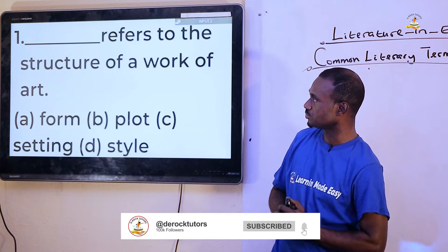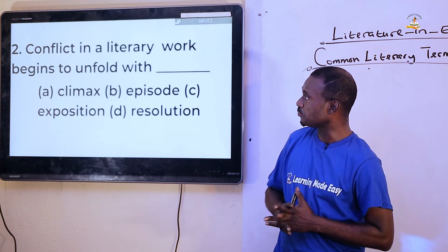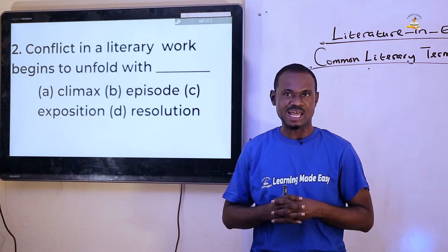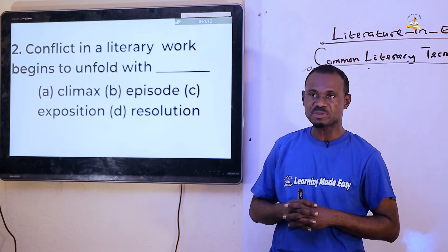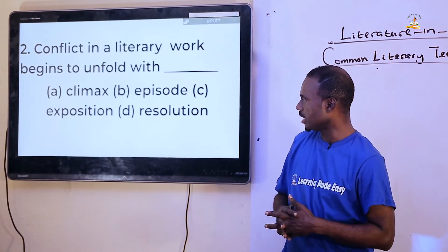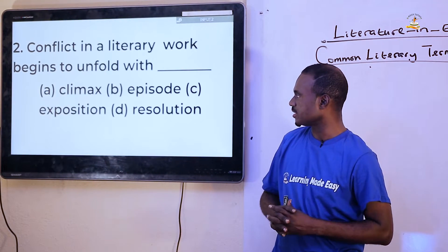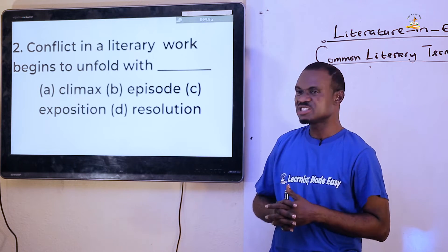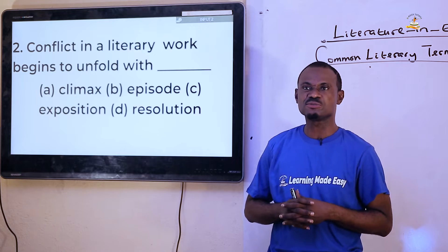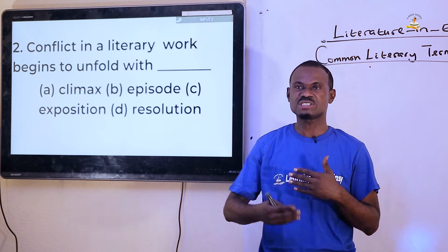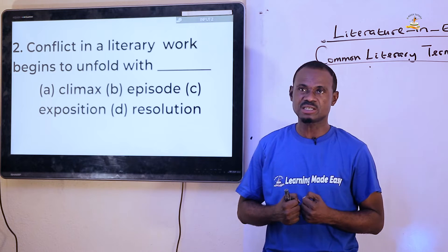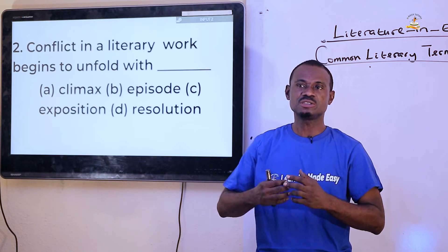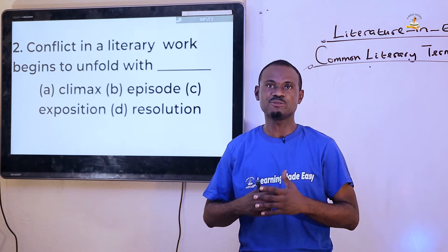Question two: 'Conflicts in a literary world begins to unfold with dash.' Options are A - climax, B - episode, C - exposition, D - resolution. The answer is not episode, not resolution, not exposition. The answer is climax, because that is the highest stage of action where you begin to see the action unfolding.